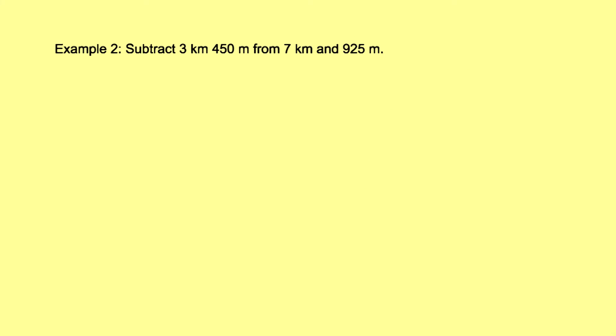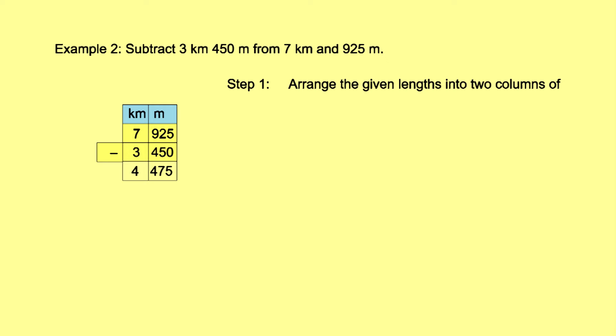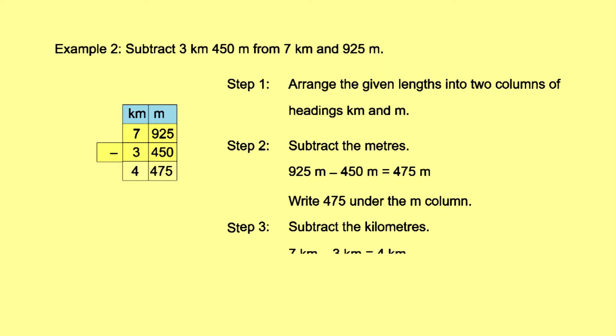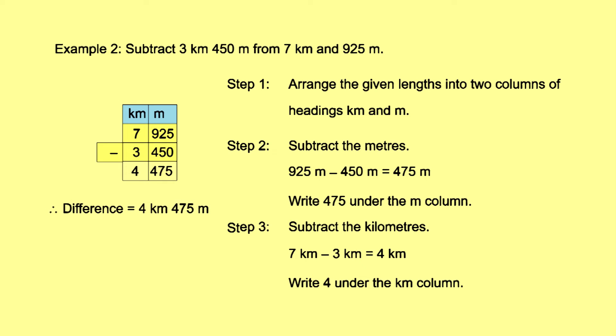Example 2: Subtract 3 kilometers 450 meters from 7 kilometers 925 meters. Step 1: Arrange into km and m columns. Step 2: Subtract the meters — 925 m − 450 m = 475 m. Write 475 under the meter column. Step 3: Subtract the kilometers — 7 km − 3 km = 4 km. Write 4 under the kilometer column. The difference is 4 kilometers 475 meters.